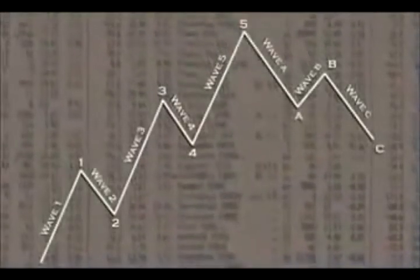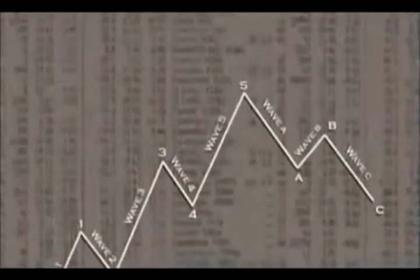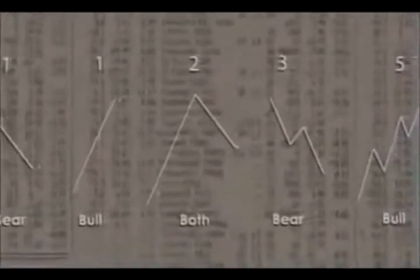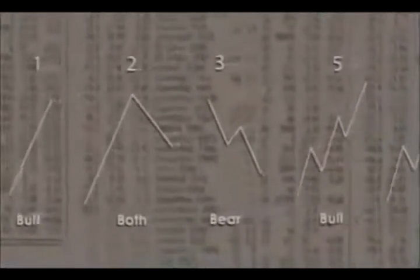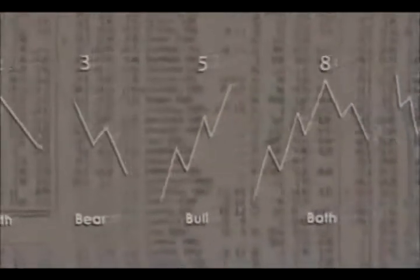If you look at the Elliott wave patterns, these patterns involve a certain number of waves called impulse waves and corrective waves. Each type of wave, when broken down into its components, reproduces the Fibonacci sequence as the degrees of subdivision increase.